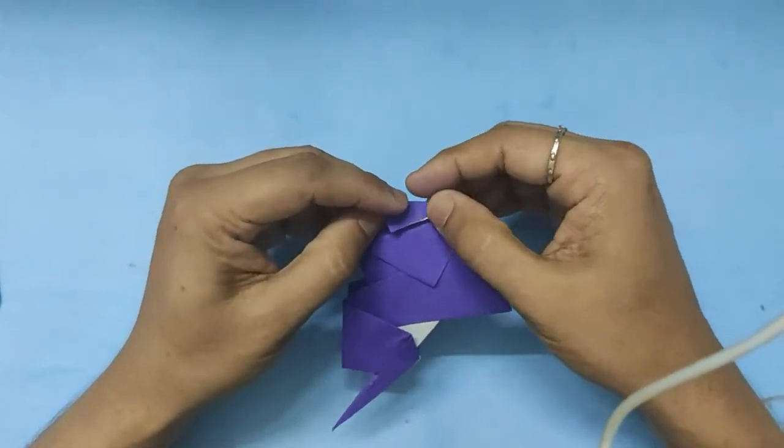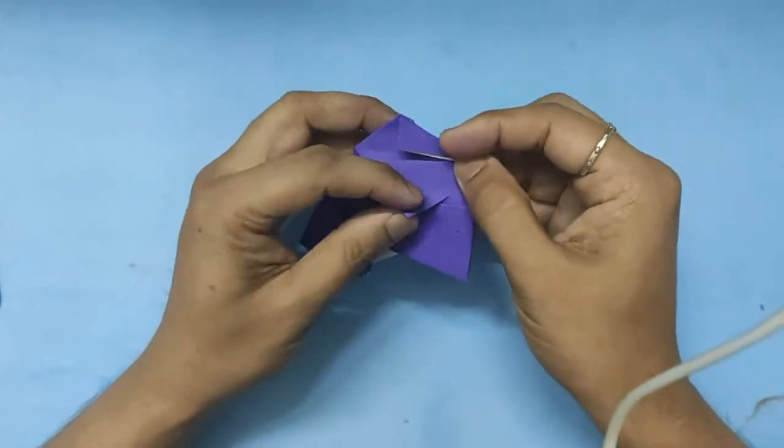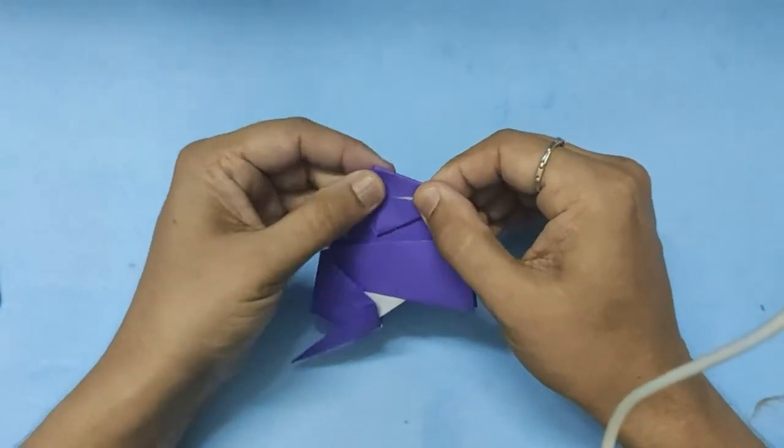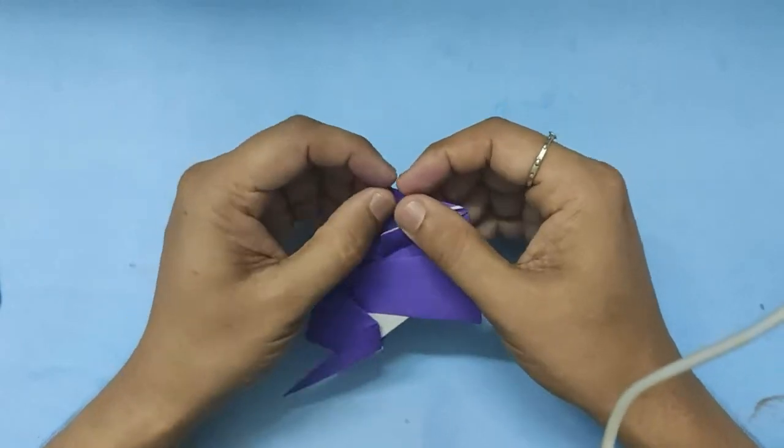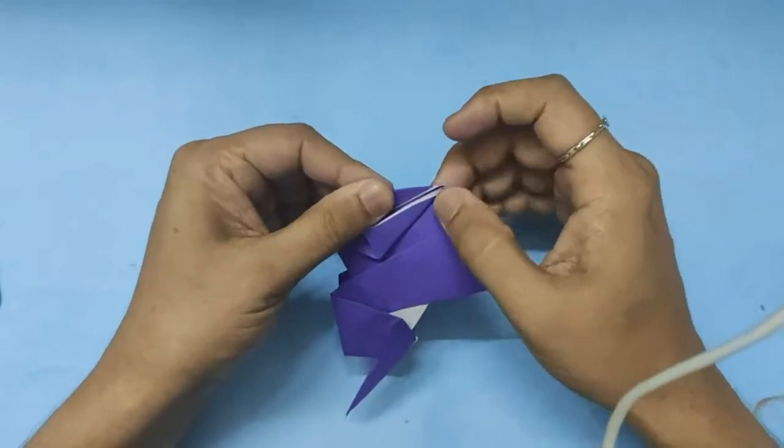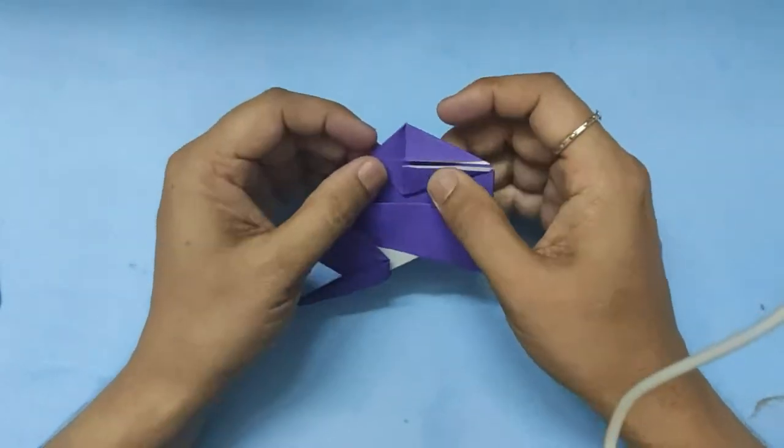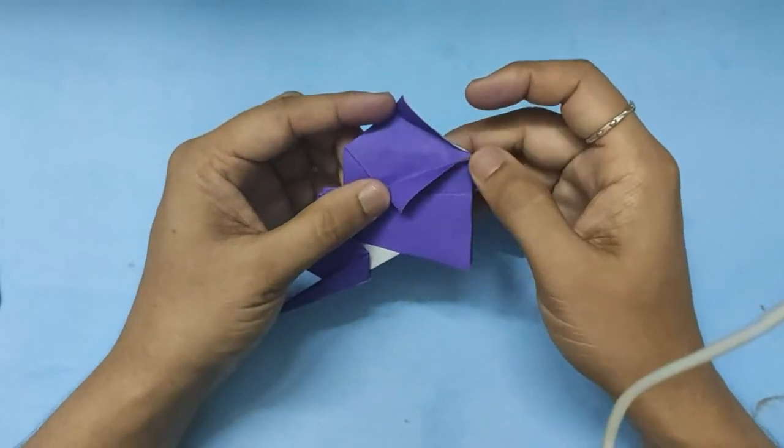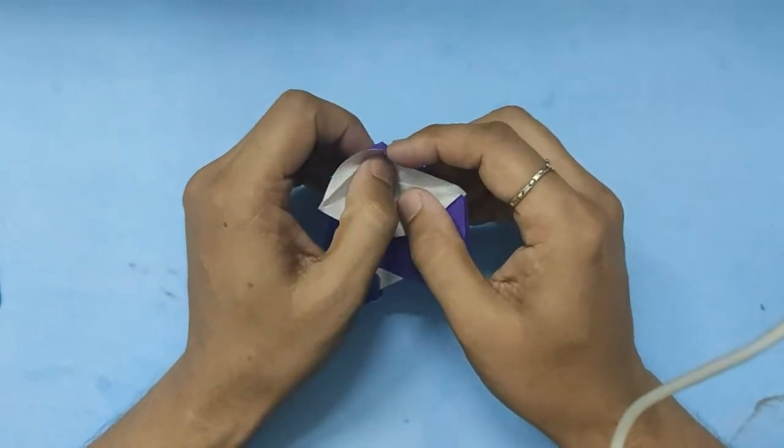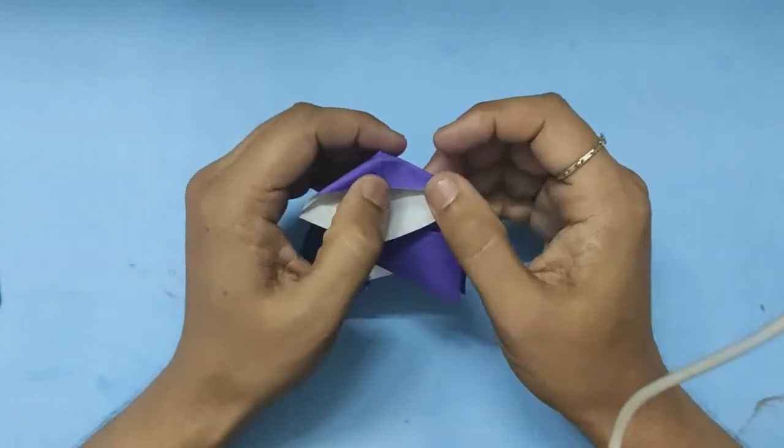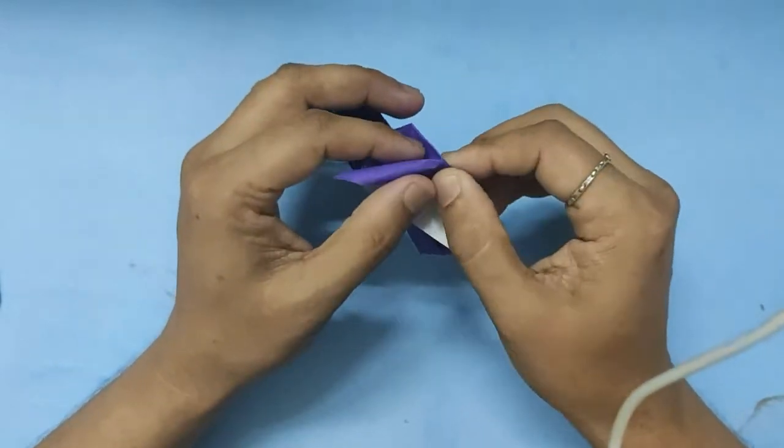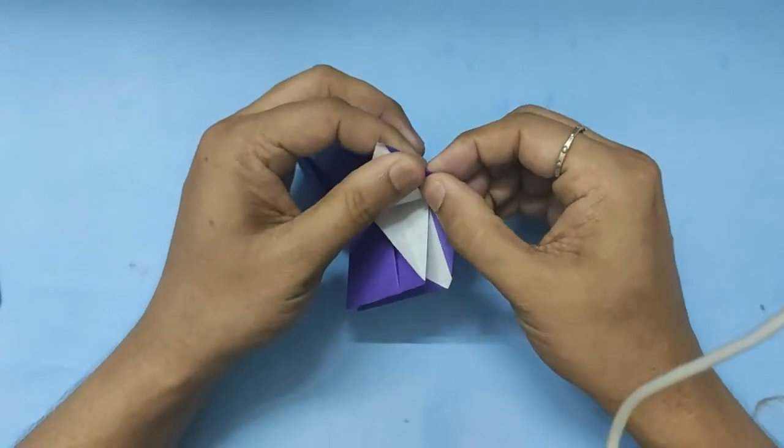So bring the two edges to the central line on both sides. Like how we make a bird, we will make a bird base now. So we will open that. Lift that part and fold it like a boat. You can see the boat being formed. And then press it along the creased lines.